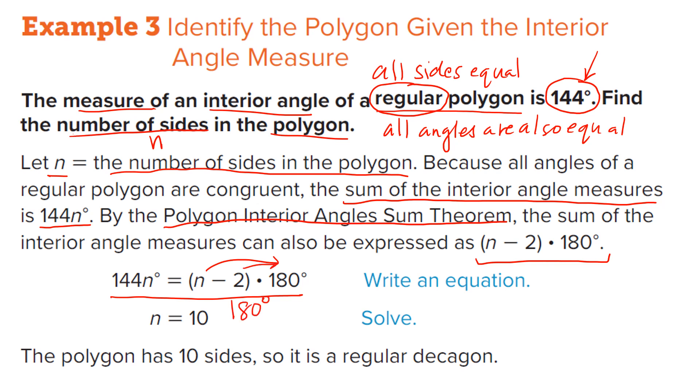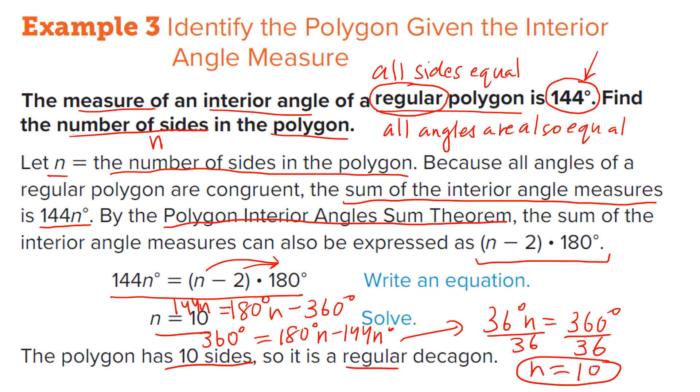So this is 180 n minus 360 degrees is equal to 144 n. So you bring 360 here. Subtract 144 n. So this gives you 36 degrees n is equal to 360 degrees. Divide by 36 both sides. So your n is going to be 10. So how many sides this regular polygon has? It has 10 sides. So it's a regular decagon. This is how you solve. Let's try a question together.